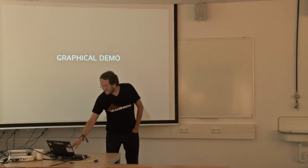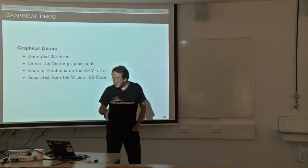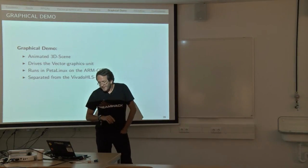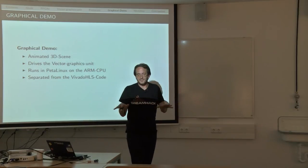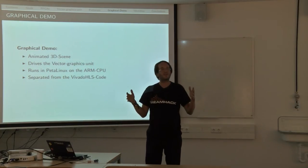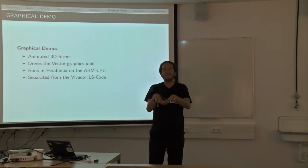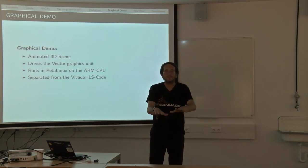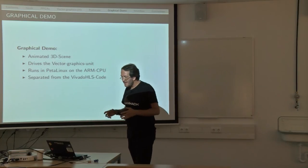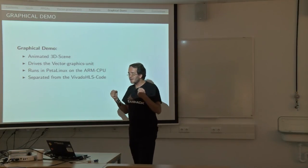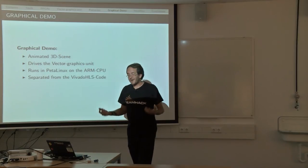The graphical demo runs on a Linux system and is used to control the vector graphics engine. The vector graphics engine has 10 objects, and for each object there are parameters such as the midpoint, rotation, and scaling. The graphical demo controls these parameters to drive the vector graphics engine.